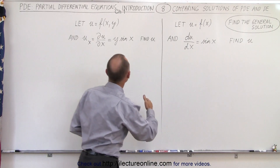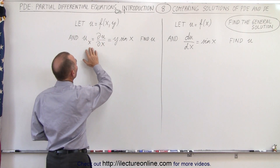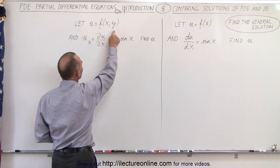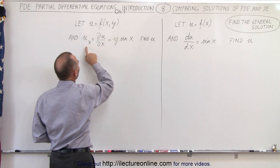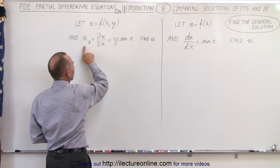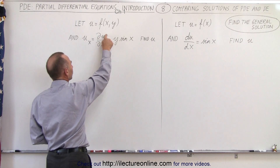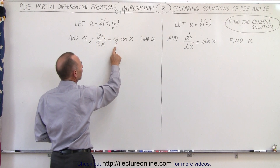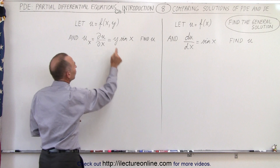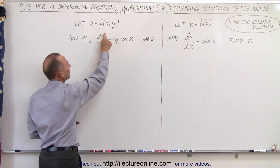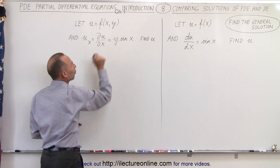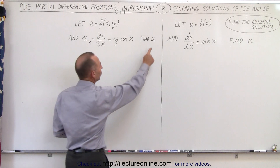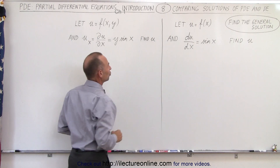Over here we have a partial differential equation because we have a function which is dependent on two independent variables, and the partial differential equation says that the partial derivative of u with respect to x is equal to y times the sine of x. Since it's the partial derivative with respect to x, y will be a constant, and again we're supposed to find the function u.